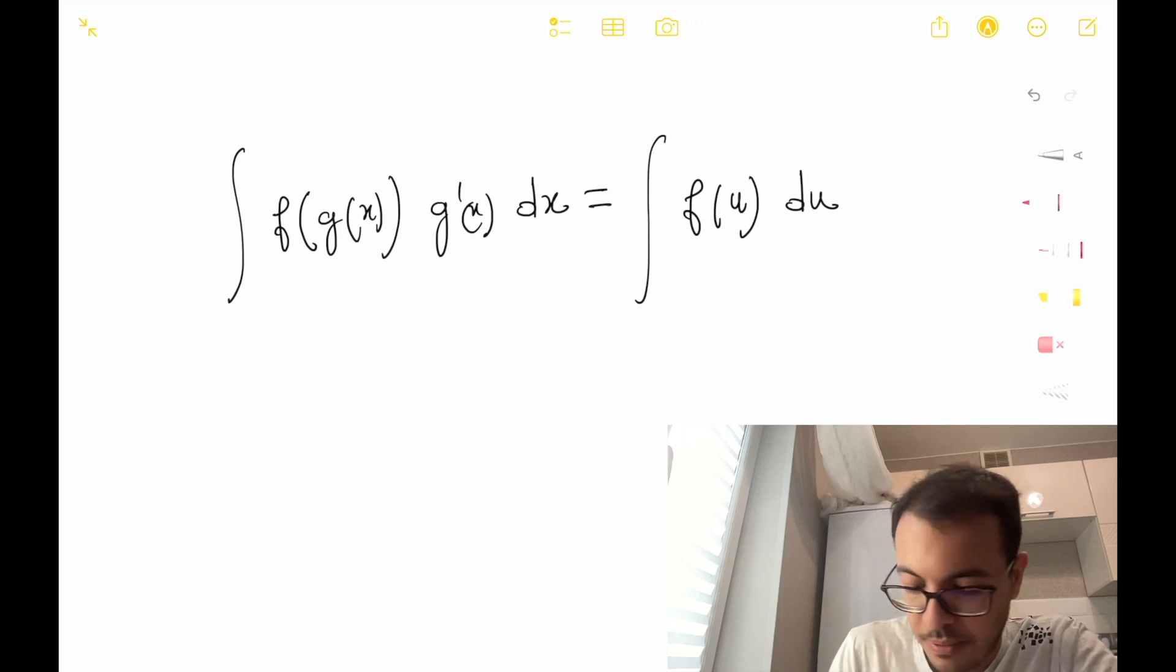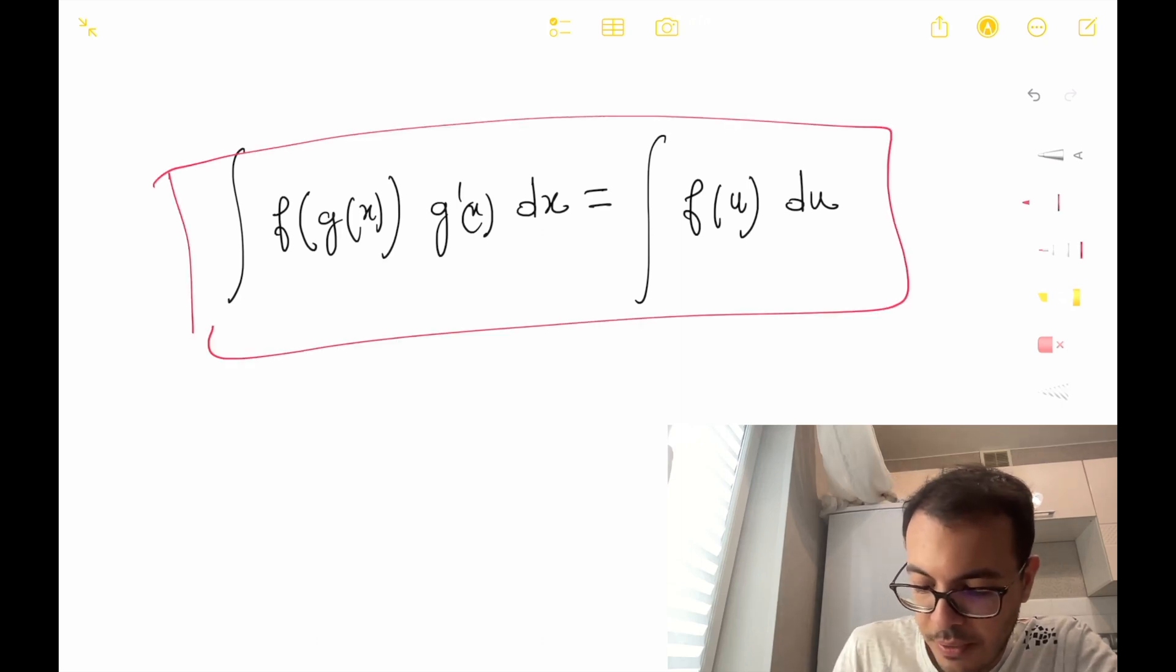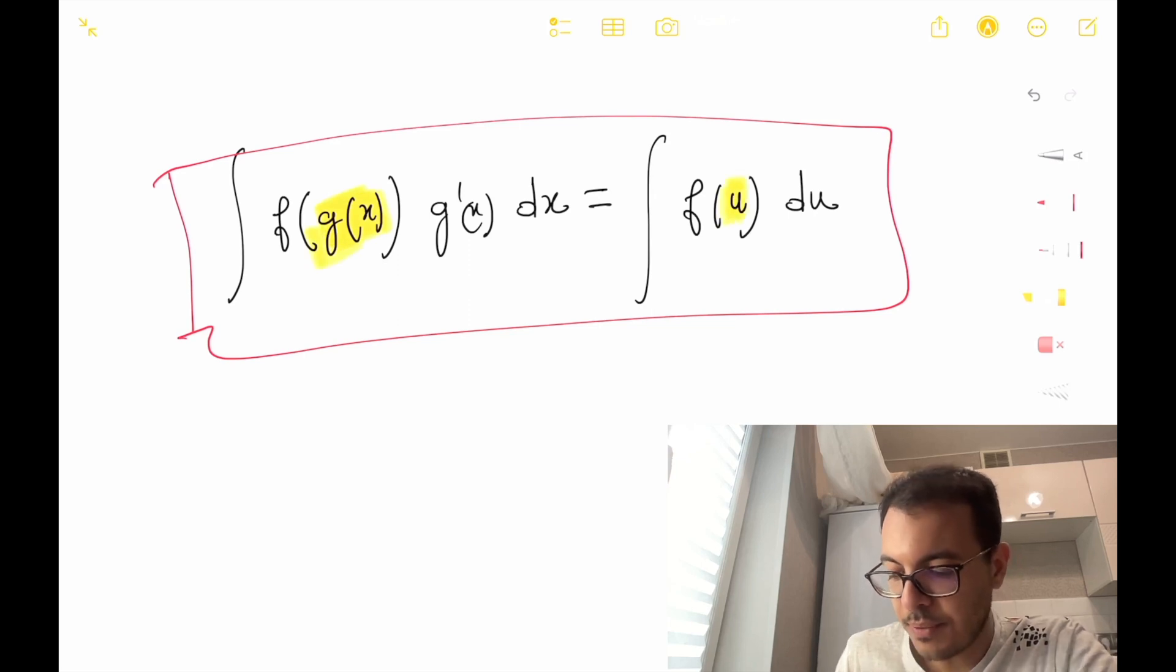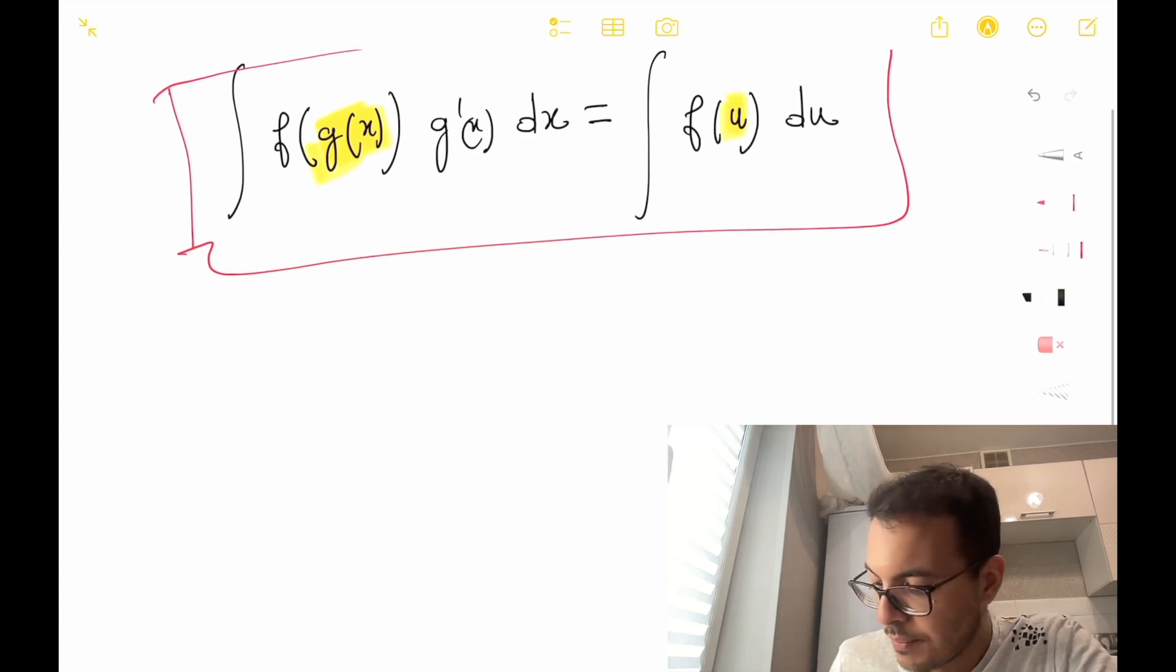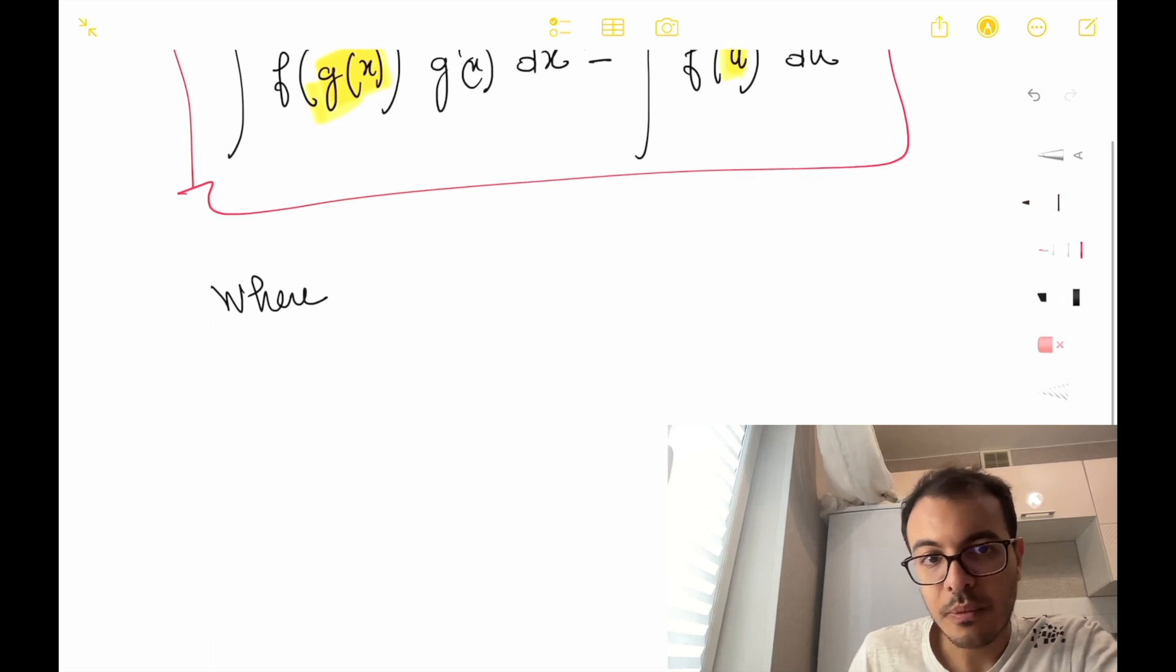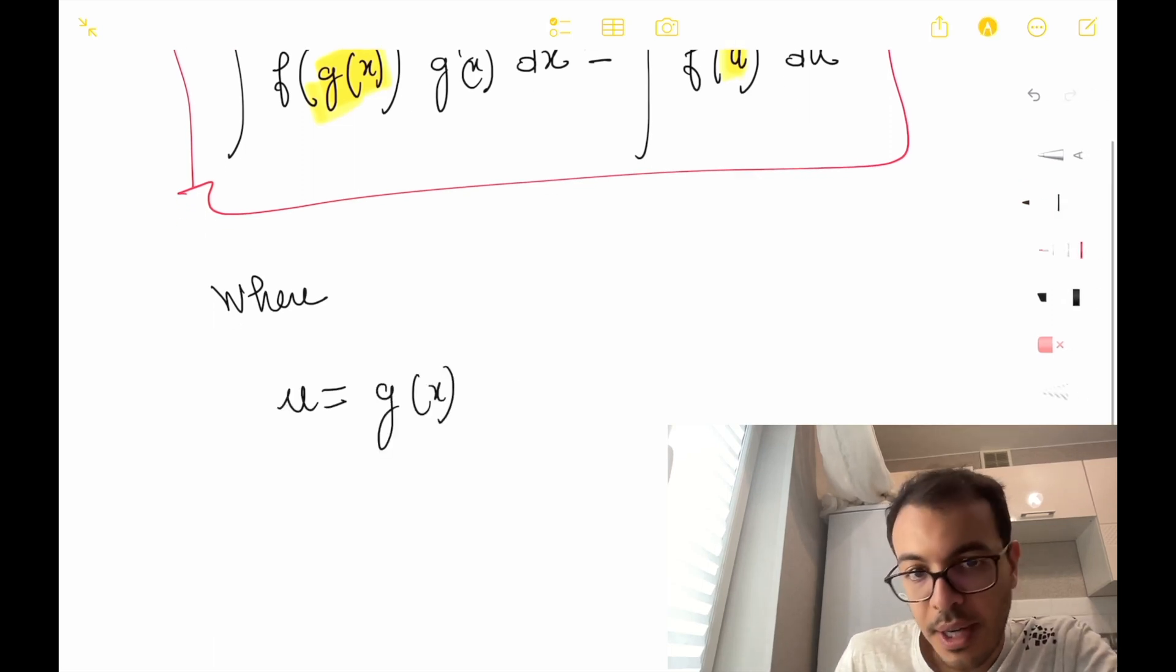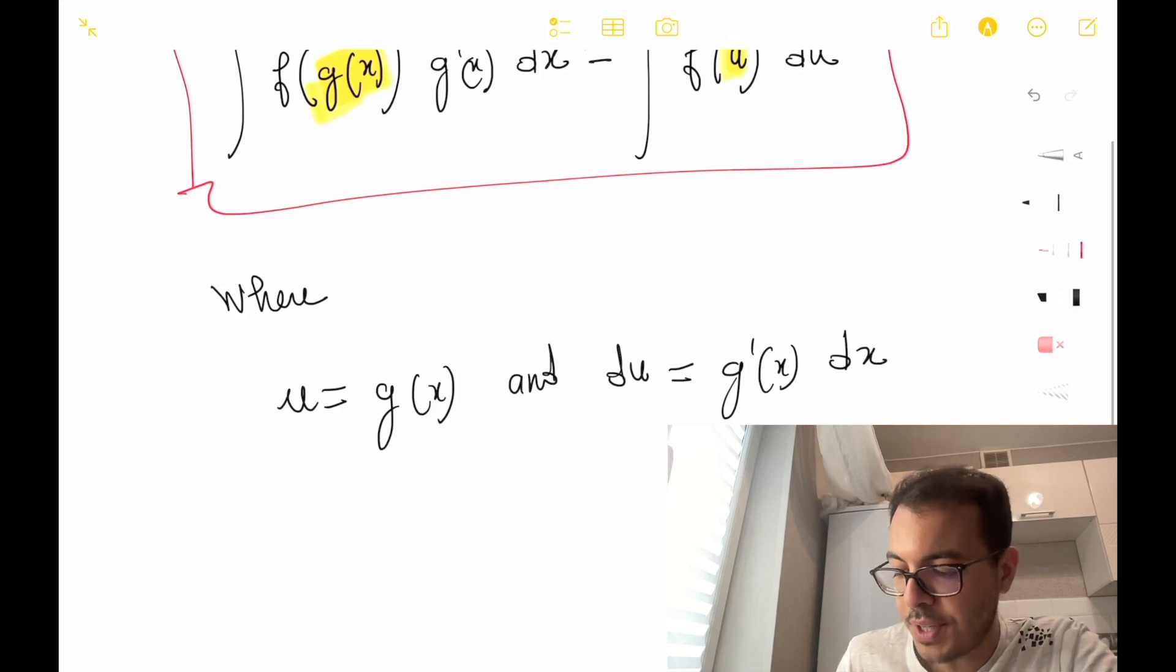So that's it. Here we have replaced g of x with u, where u equals g of x and du equals g prime of x dx.